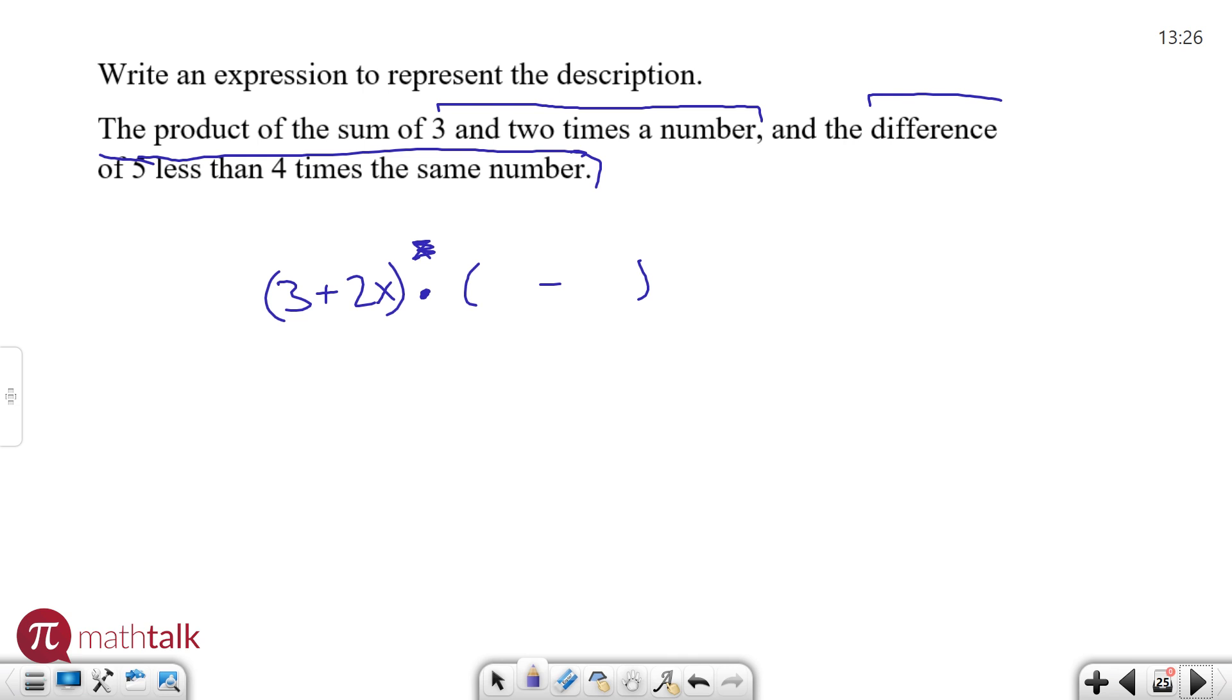Five less than four times the same number. So five less than something means I'm going to be subtracting five off of it, which means my minus five is going to go at the end and four times the same number. So instead of twice or two times, it's four times my number.